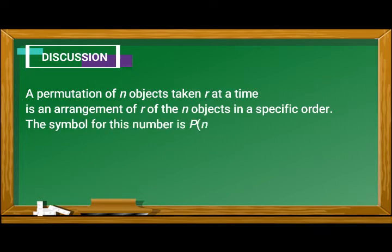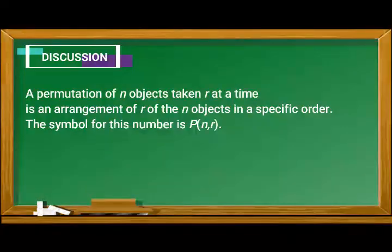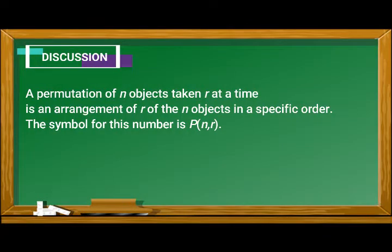The symbol for this number is P(n,r) or read as permutation of n objects taken r at a time.